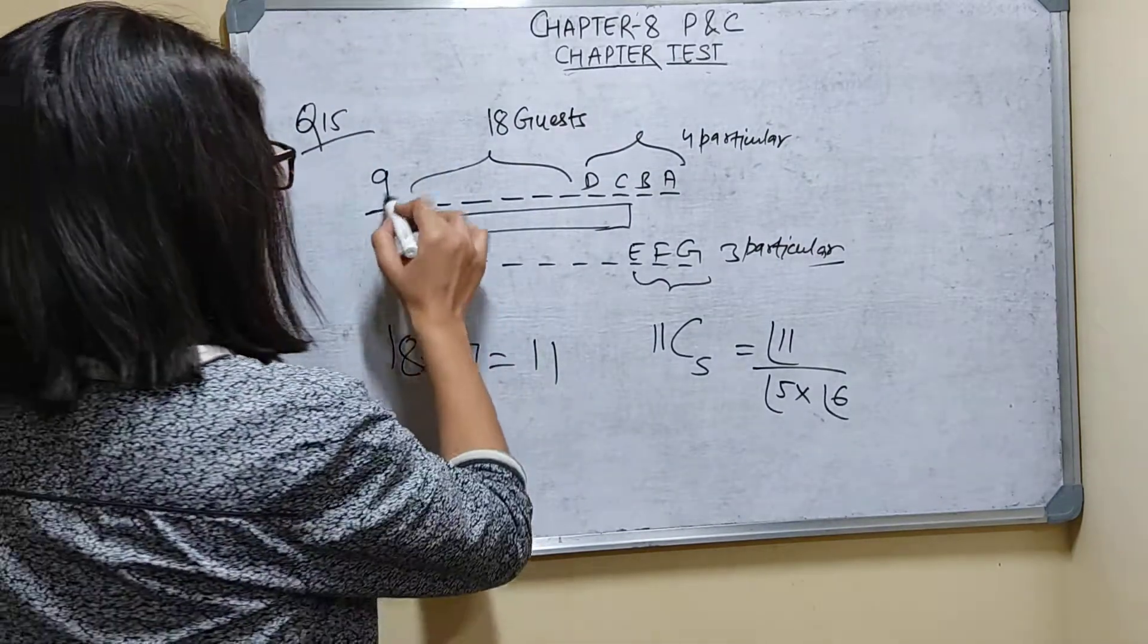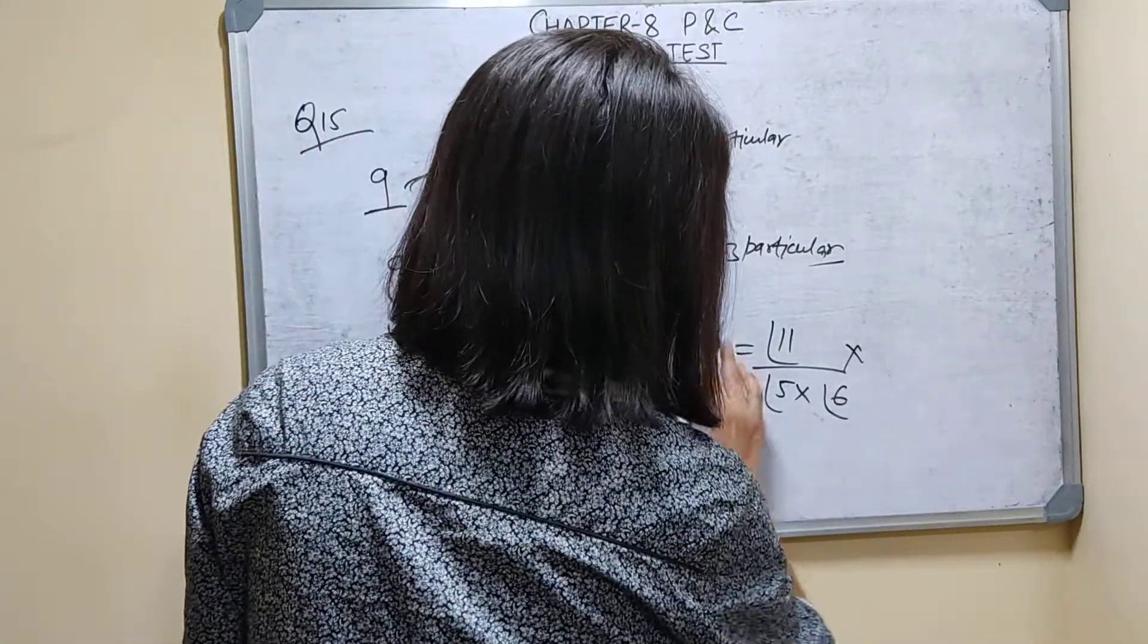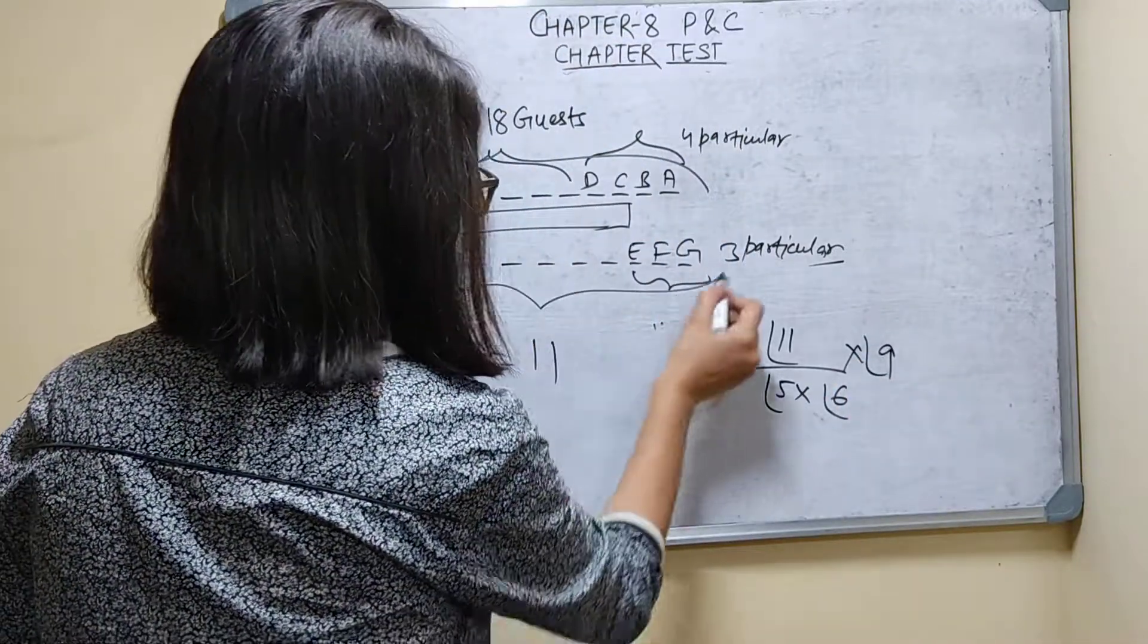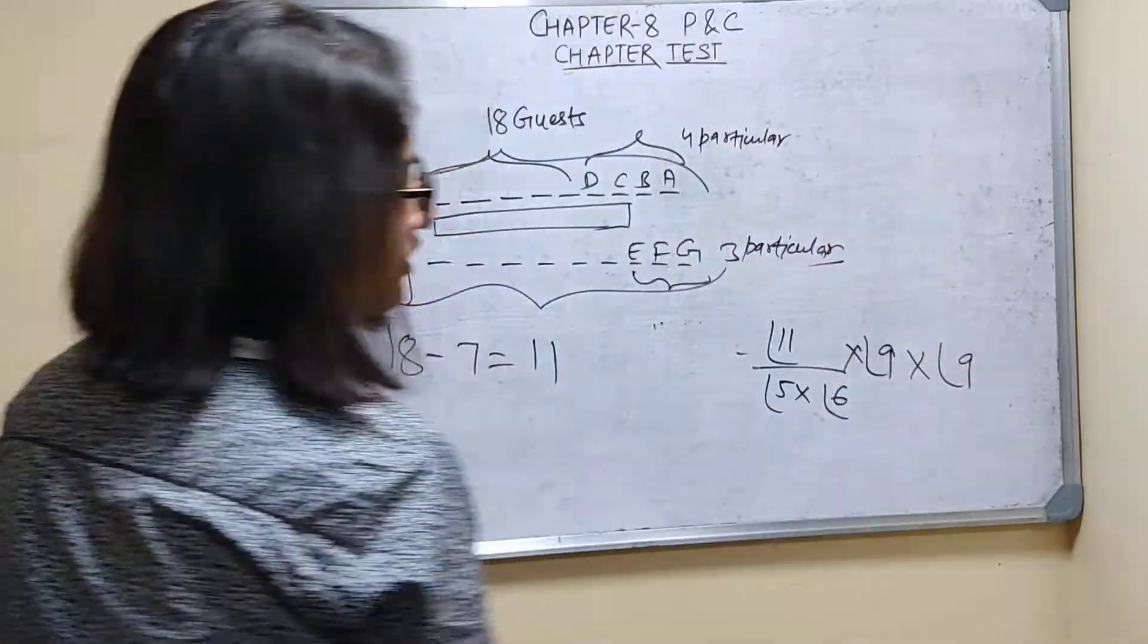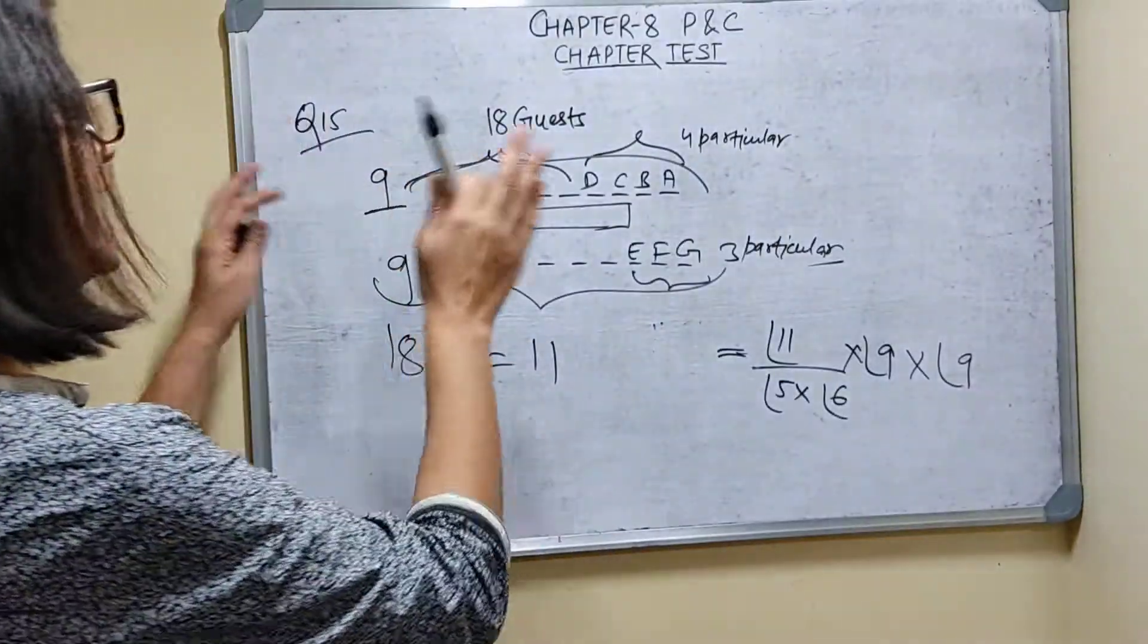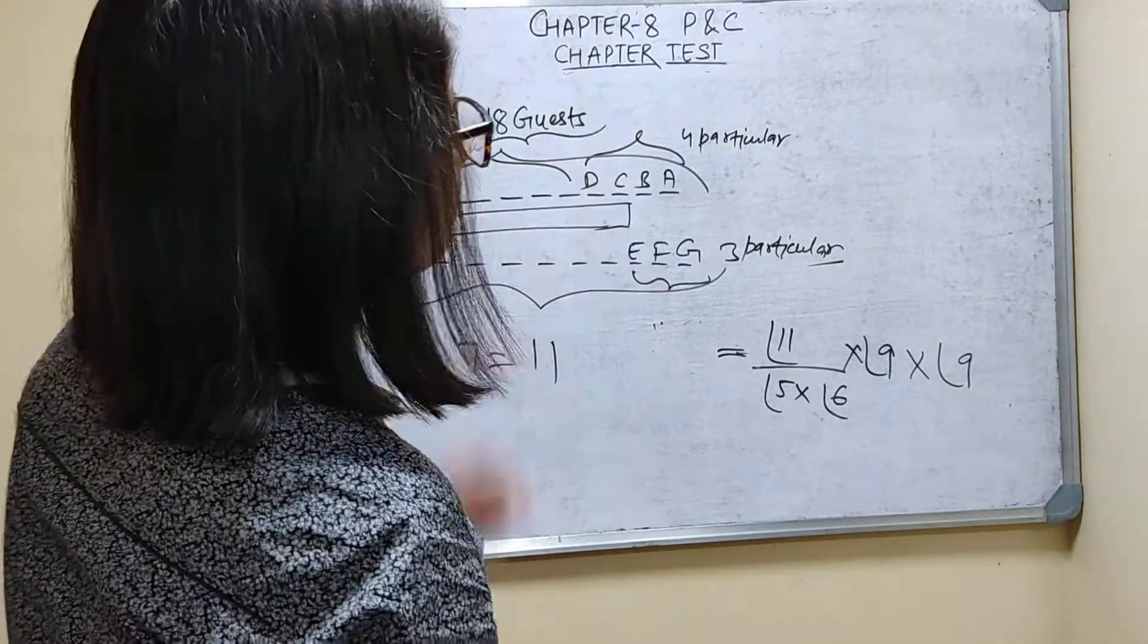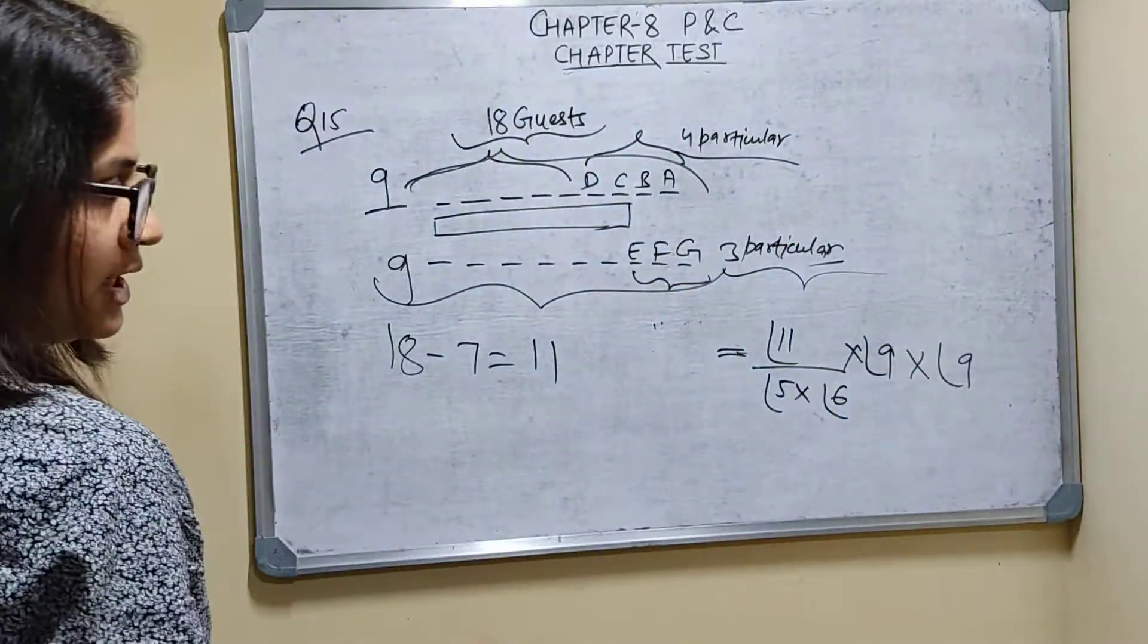Then here these all 9 people can rearrange themselves in factorial 9 ways by multiplication principle of counting. And this side also, 9 will rearrange themselves in factorial 9 ways. So by multiplication principle of counting, this is the total number of ways in which the seating arrangement can be made for 18 guests in which 4 particular will sit this side and 3 particular will sit this side.